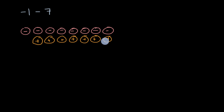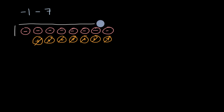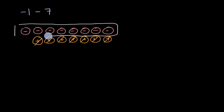So subtract out one, two, three, four, five, six, seven. And then what are we left with? We're left with all of this business right over here. And what is that? That's one, two, three, four, five, six, seven, eight. This is equal to negative eight.